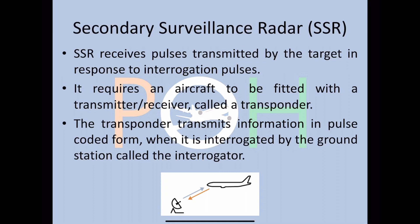SSR receives pulses transmitted by the target in response to interrogation pulses. There is an interrogator on the ground asking for information from the aircraft. The aircraft has a transponder — a transmitter and receiver — which, once interrogated, transmits back to the ground station. The transponder transmits information in pulse-coded form when interrogated by the ground station.